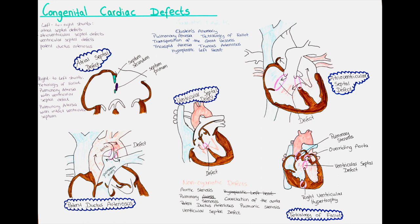Factors leading to contraction and closure of the ductus include lower prostaglandin levels, higher partial pressure of oxygen, increased endothelin-1, norepinephrine, acetylcholine, and bradykinin. In a patent ductus arteriosus, there is a communication between the descending thoracic aorta and the pulmonary artery, and it is one of the most common congenital heart defects. After three months, if the ductus arteriosus is still open, it is considered abnormal. It leads to a left-to-right shunt, causing more blood to flow toward the lungs and leading to decreased pulmonary compliance.